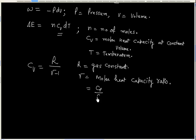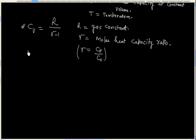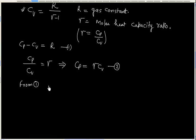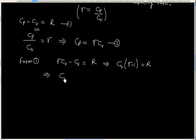So gamma is simply Cp by Cv. The expression Cv equals R divided by gamma minus one can easily be proved. We know Cp minus Cv equals R, and Cp by Cv equals gamma, so Cp equals gamma Cv. Substituting into the first equation: gamma Cv minus Cv equals R, so Cv times (gamma minus one) equals R, giving us Cv equals R divided by gamma minus one.